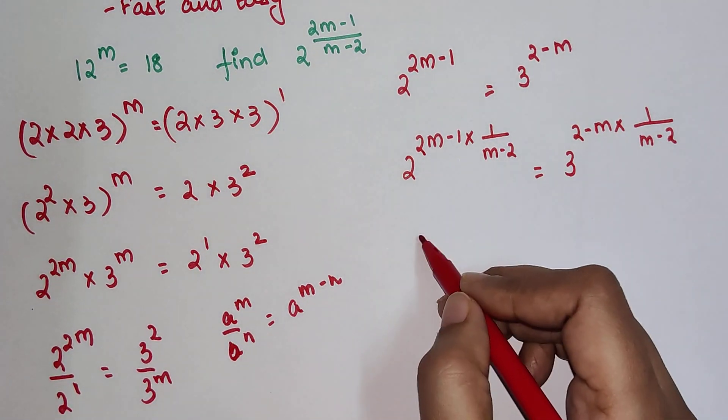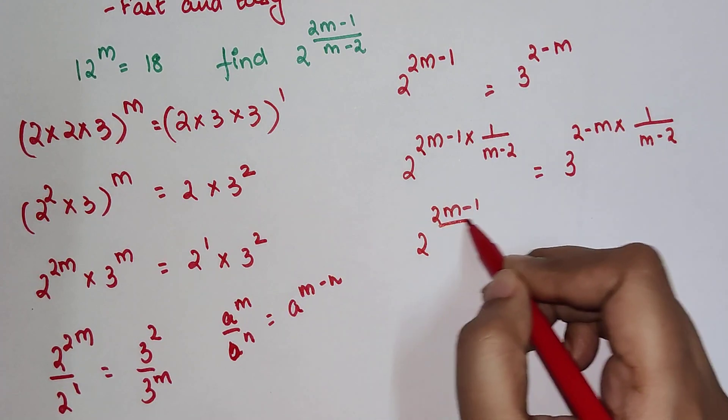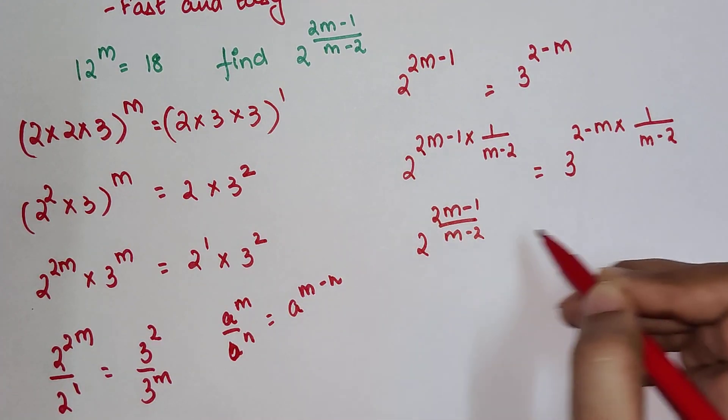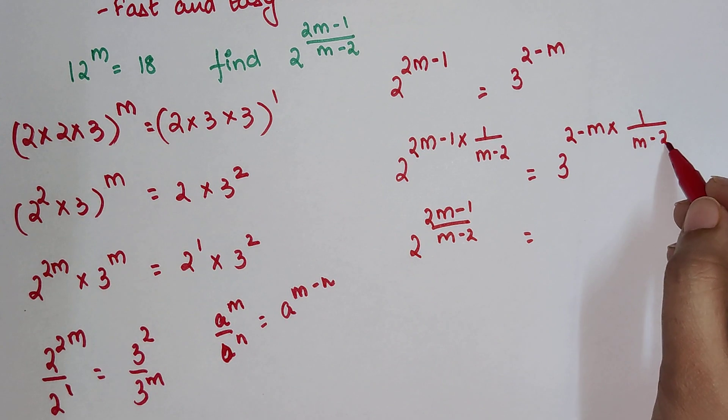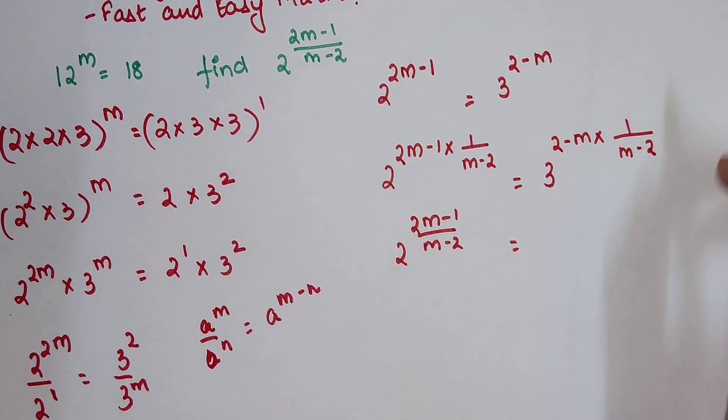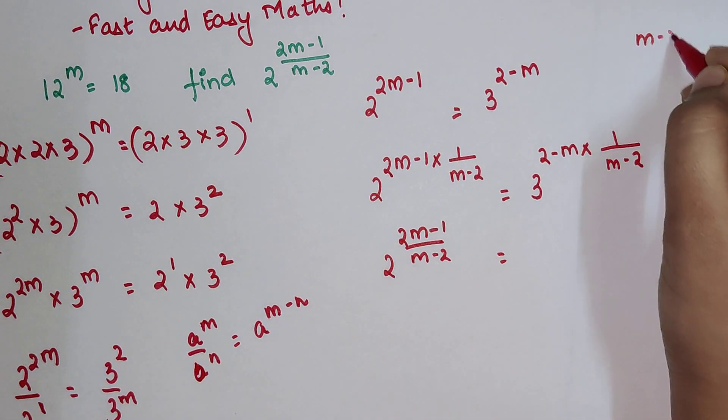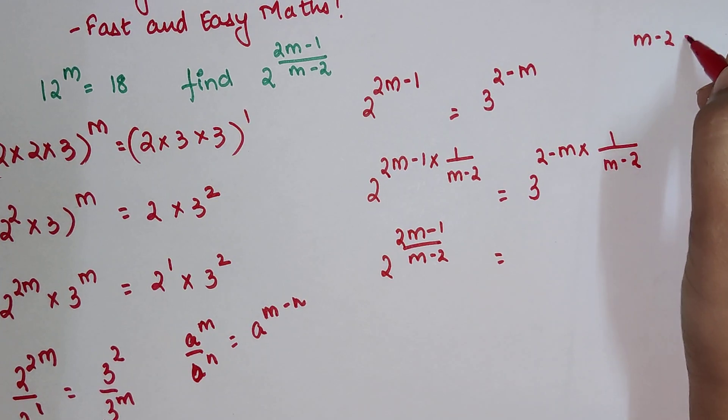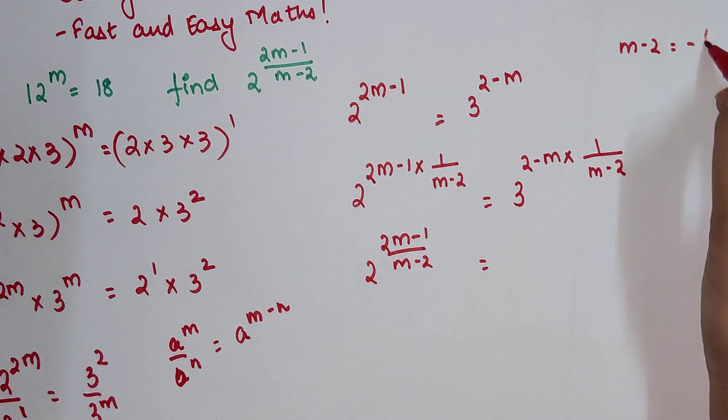This is nothing but 2 raised to (2m-2) equals... now this m-2 can be written as 2-m, right? If I take minus common, so I will write 2 minus m.